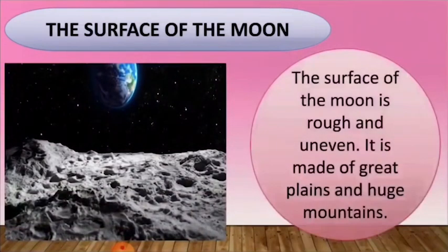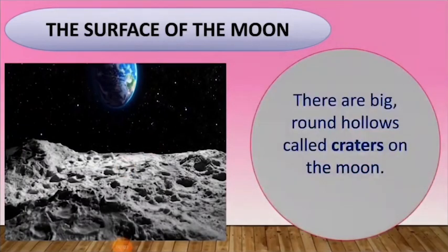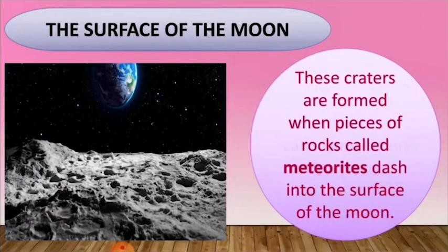If we saw the satellite images of the moon, we will come to know that the surface of the moon is rough and uneven. There are millions of big round hollows called craters which scar the surface of the moon. These craters are formed when pieces of rocks called meteorites dash into the surface of the moon.